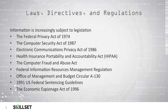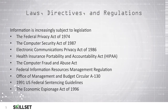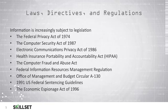The Computer Fraud and Abuse Act prohibits individuals from accessing federal government computers without authorization. The Federal Information Resources Management Regulation provides a set of regulations for using, managing, and acquiring computer resources in the federal government. The Office of Management and Budget Circular A-130 requires that federal agencies have security programs in place. The 1991 Federal Sentencing Guidelines provides sentencing guidelines for white-collar crimes and enhancements for using technology with those crimes.